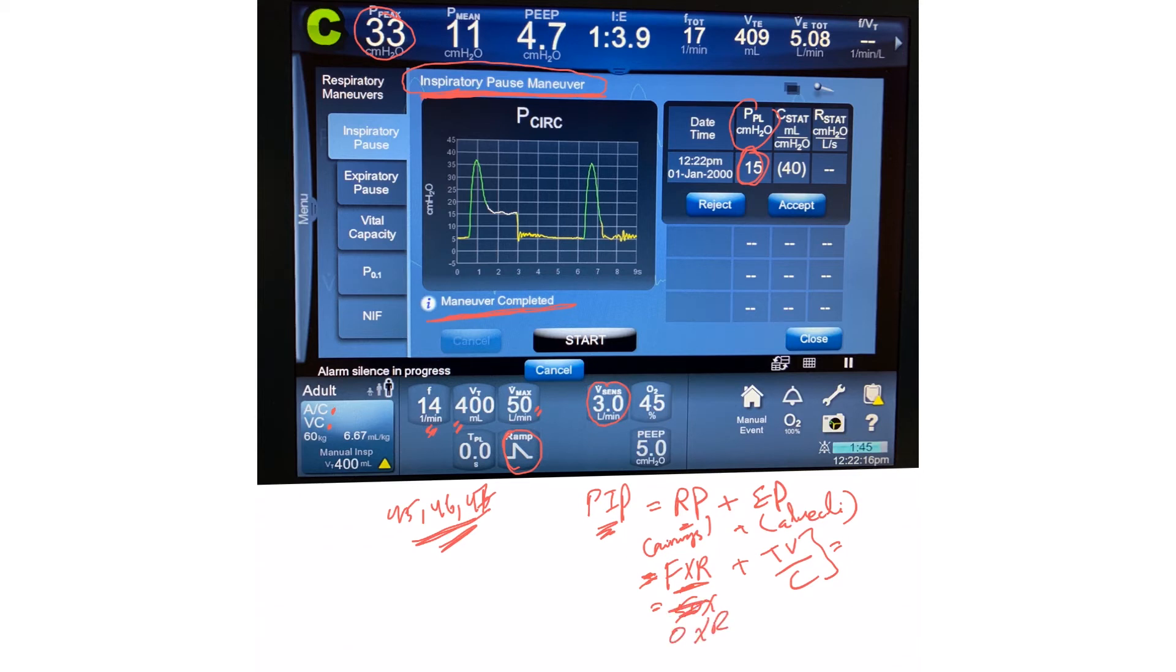The proximal airway pressure equals flow (which is 0) multiplied by resistance, plus the plateau pressure. Plateau pressure (15 centimeters) is the maximum alveolar pressure during the inspiration cycle, measured at the end of inspiration when the lungs receive the whole volume and we hold the air, not allowing it to leave the alveoli.